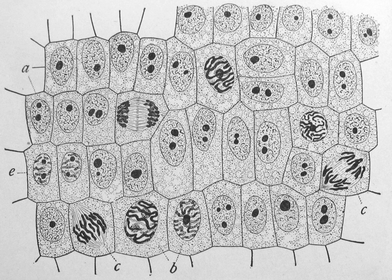Flagella are organelles for cellular mobility. The bacterial flagellum stretches from the cytoplasm through the cell membranes and extrudes through the cell wall. They are long and thick thread-like appendages, protein in nature. A different type of flagellum is found in archaea and a different type is found in eukaryotes.